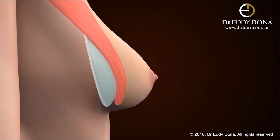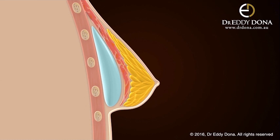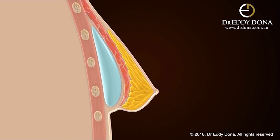Over time, the natural breast tissue will soften and sag. Certain things can accelerate these changes, such as significant weight fluctuations or after pregnancy with or without breastfeeding. The end result is that the breast tissue drops down and effectively starts to hang from the breast implant mound.